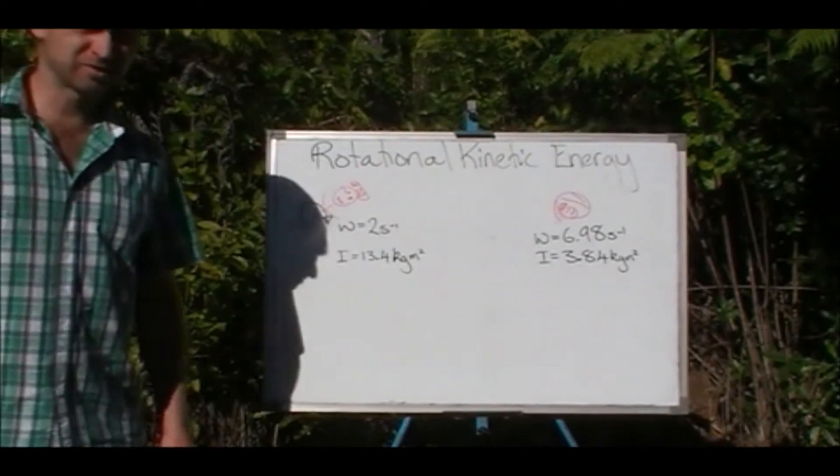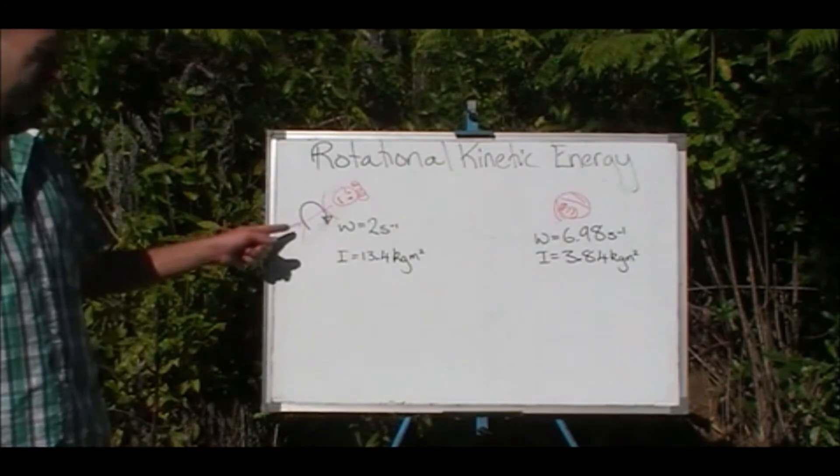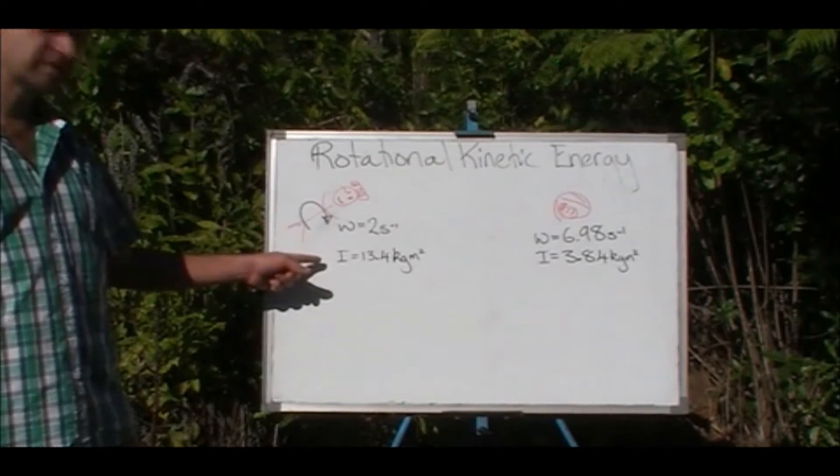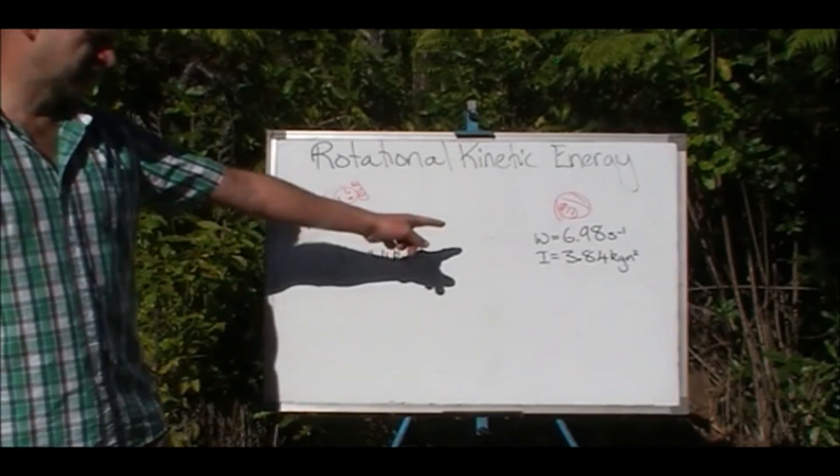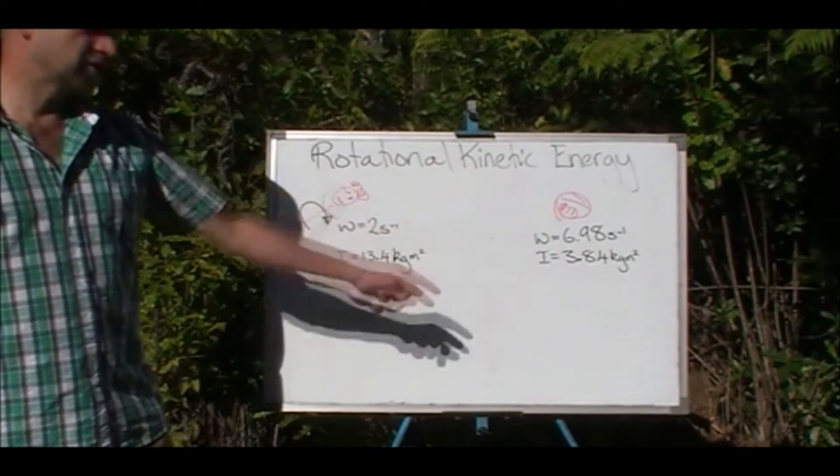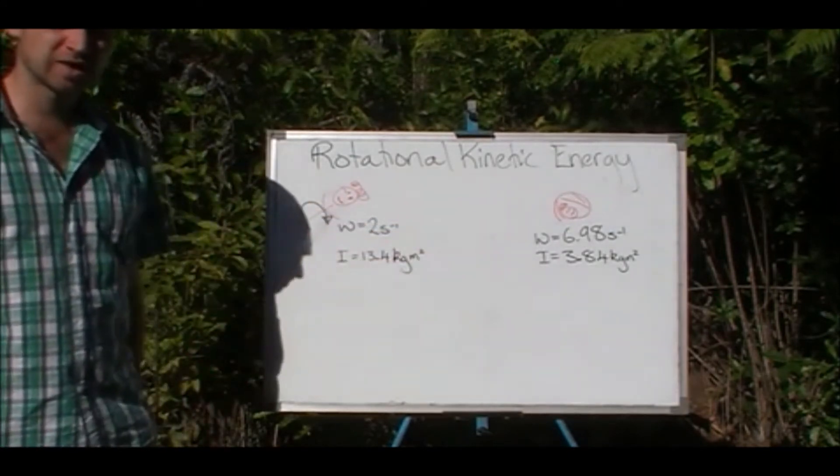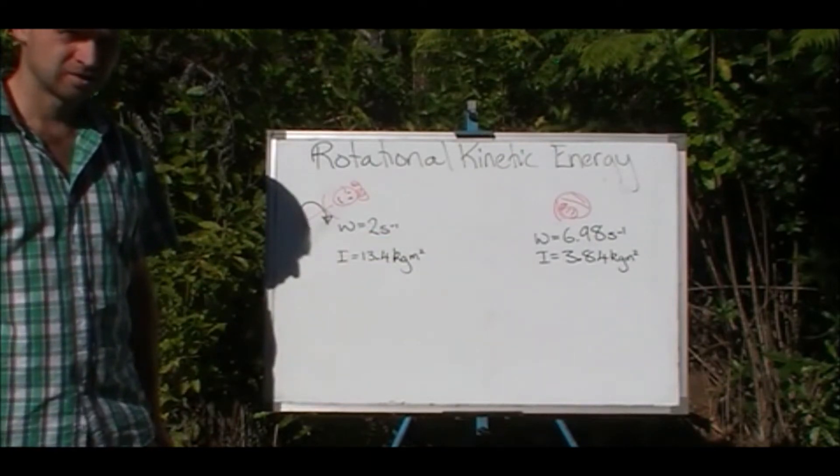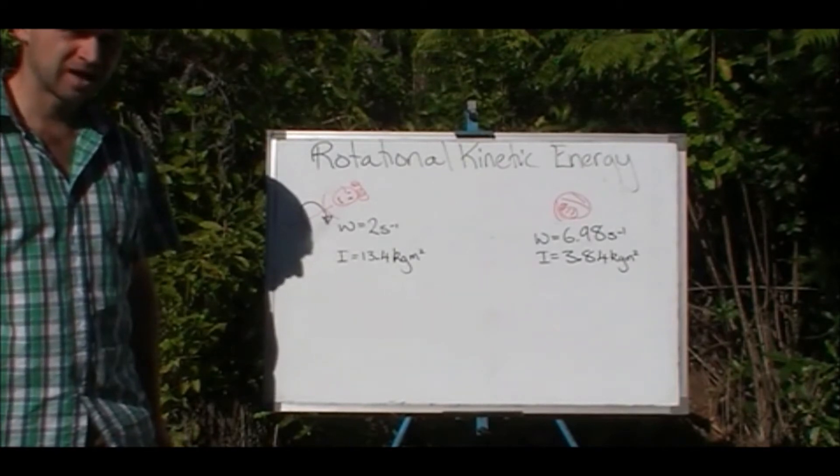Just in case it was too much of a hassle to flick back to the other video, here's a summary of what we found out. To start off with, angular velocity of 2, inertia of 13.4. Once they tucked into a ball, angular velocity of 6.98, inertia of 3.84. Calculate rotational kinetic energy in each part. Work out what's happened and why it's happened.